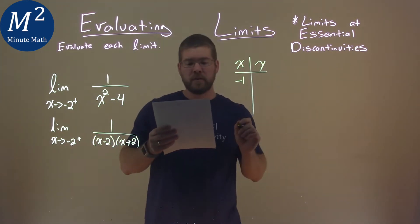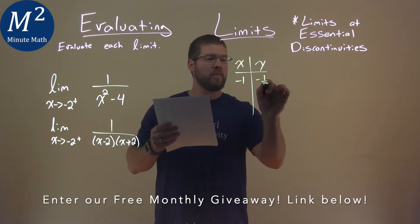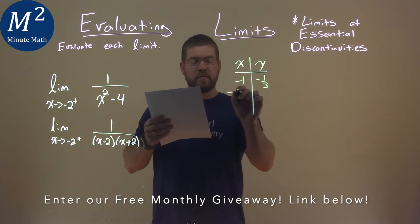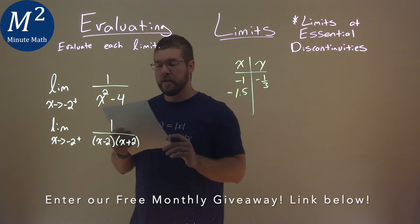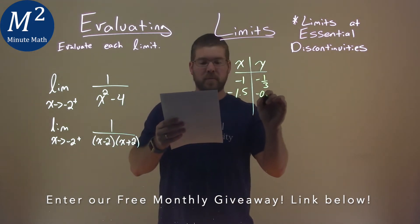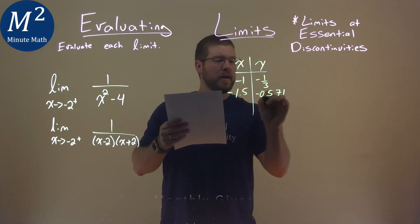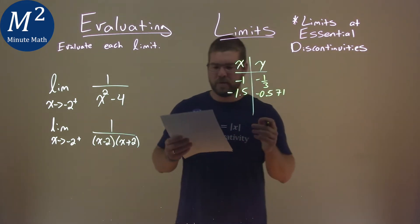If negative 1 goes in for x, our output's a negative one-third. If a negative 1.5 goes in for x, we get a negative 0.571, and of course, I broke rules of fractions and decimals, but it's okay.